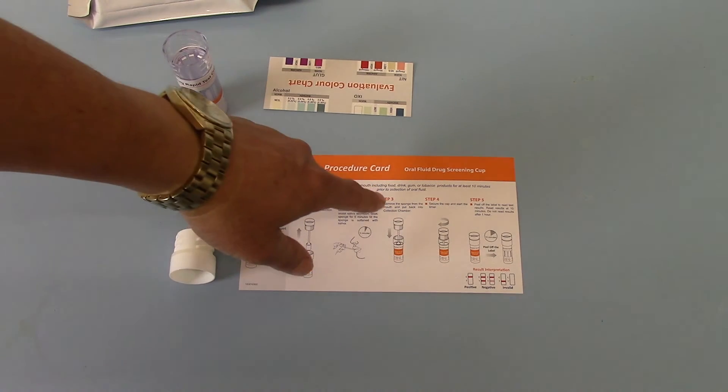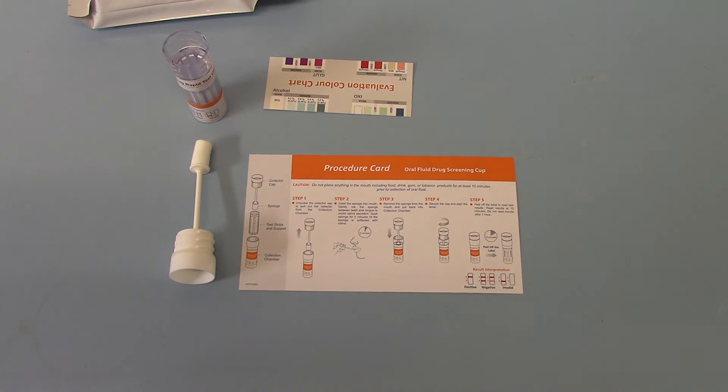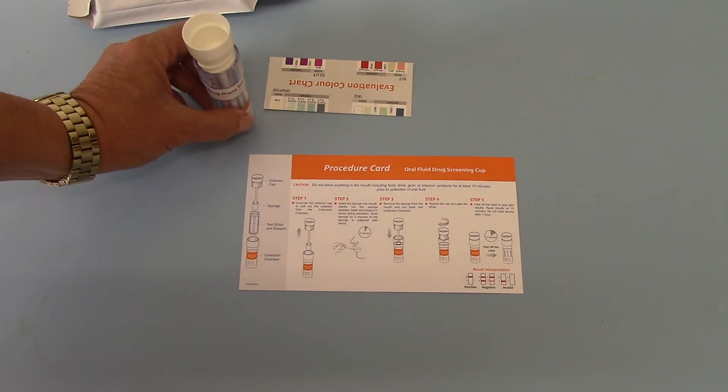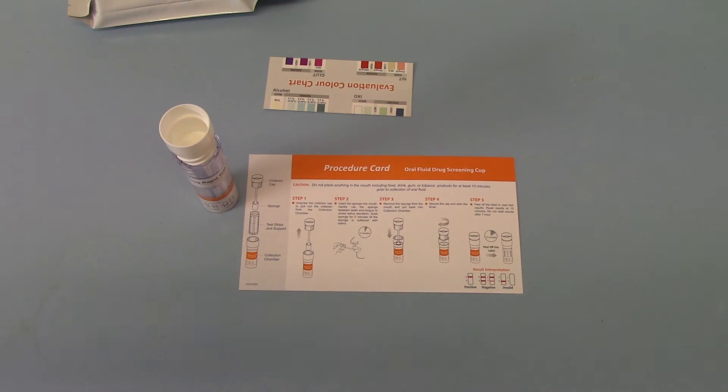It also then runs you through putting the test back together by screwing the cap down into the barrel of the test. The saliva is discharged to run on the 12 test membranes, and then guides you in terms of reading the results at 10 minutes for this test.